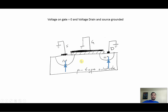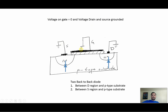This is the front view of the NMOS transistor. What happens when you don't apply any voltage to the gate, the drain, or the source? What you're going to have is two back-to-back diodes right here — between the drain region and the P-type substrate, and between the source region and the P-type substrate. You're not going to have conduction and nothing is going to happen.